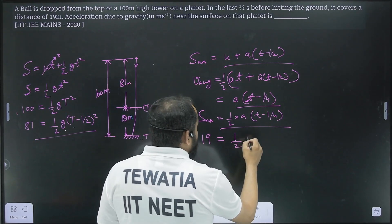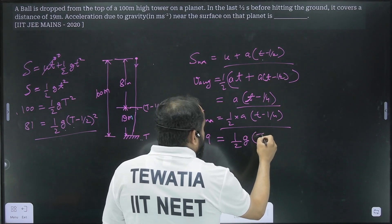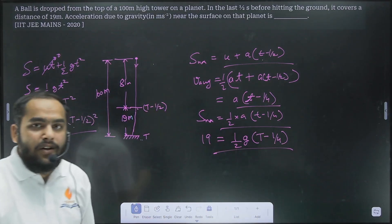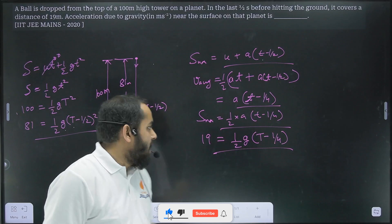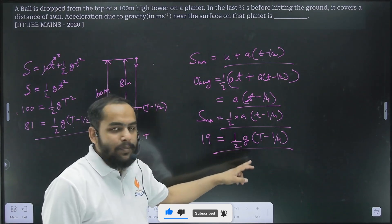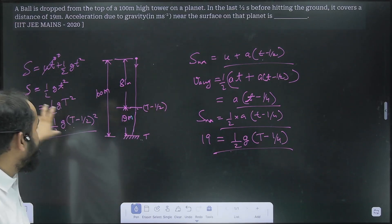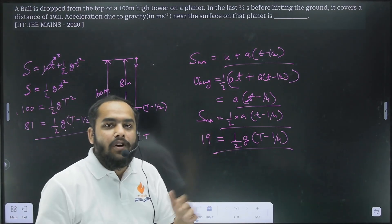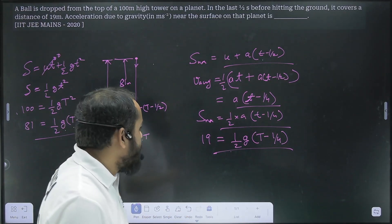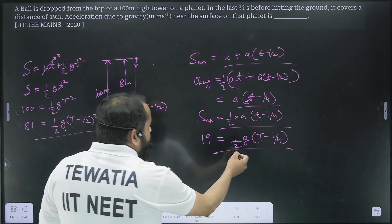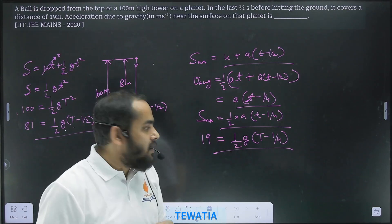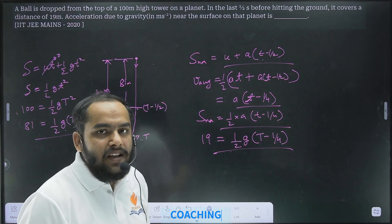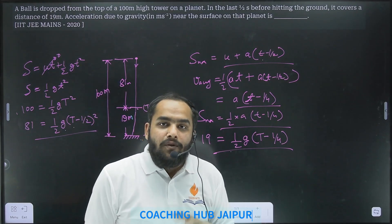Now let's look at what happens if we substitute our values here. We can do 19 equals to 1 by 2 into g into t minus 1 by 4. Once again we get another equation with two unknowns and usually people will try to use two of these three equations and try to put the value of t or g from one into the other. And this calculation does not seem very easy and the quadratic equation you are going to get from here is going to take a lot of time.